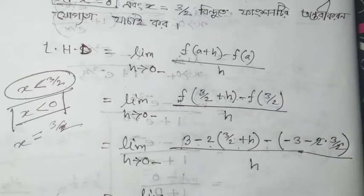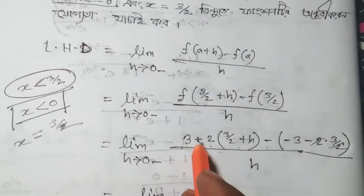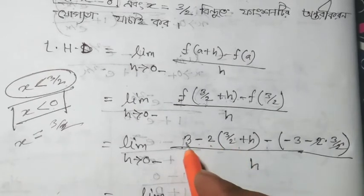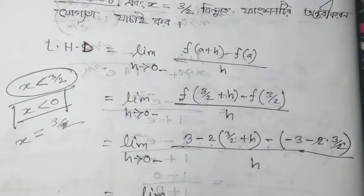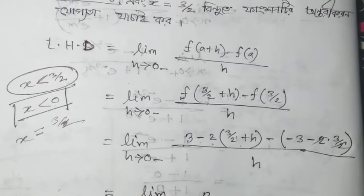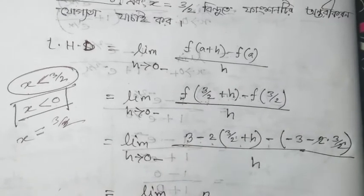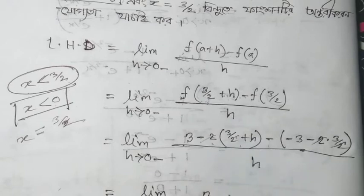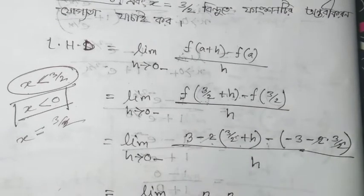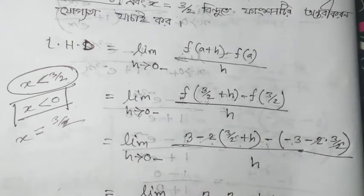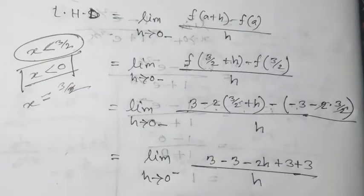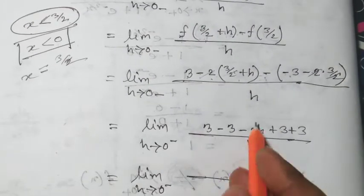Putting in the values: 3 - 2(3/2) gives 3 - 3 = 0, and -2h remains, so we get minus 3 minus 2h minus minus 3, which simplifies. Then minus 2h divided by h, limit h tends to 0 minus, gives us minus 2. So the left-hand derivative equals minus 2.